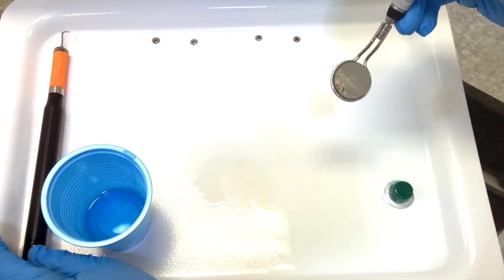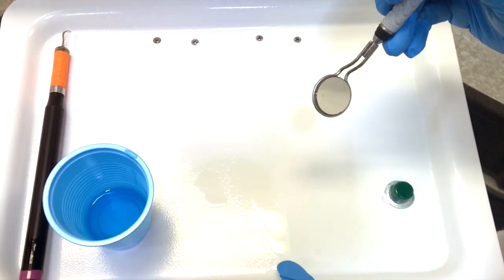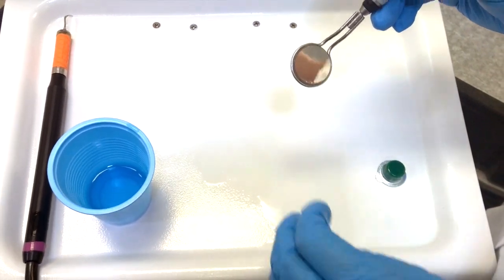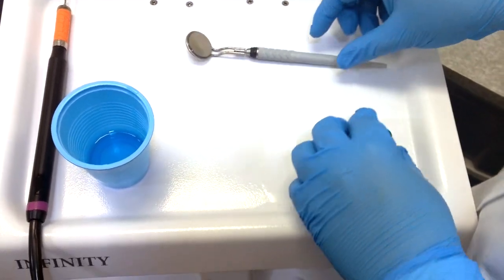The second way you can do is you can actually use a little bit of prophy paste on your mirror to help prevent the dots.